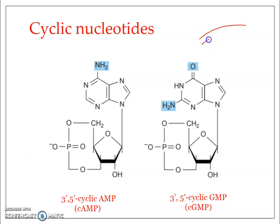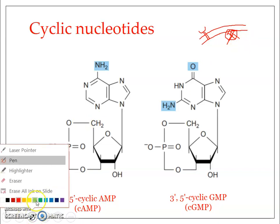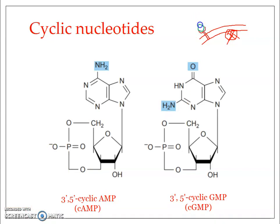Cyclic AMP and cyclic GMP are produced intracellularly. Consider the double-layered plasma membrane — there will be a receptor for the primary messenger on it, and there are enzymes commonly referred to as cyclases. When the primary messenger — whether a hormone or neurotransmitter — binds to the receptor, a hormone-receptor complex is formed. The primary messenger cannot enter through the plasma membrane, so it binds with the receptor, which is associated with another molecule.